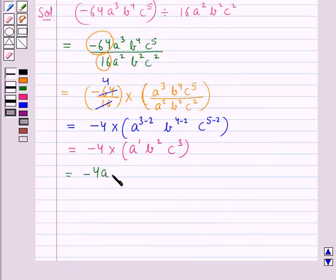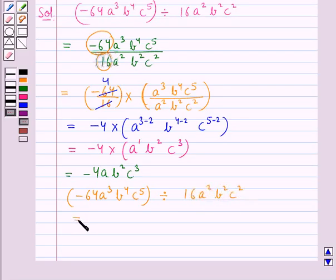So on dividing the two monomials, -64a³b⁴c⁵ by the monomial 16a²b²c², we get the answer as -4ab²c³.